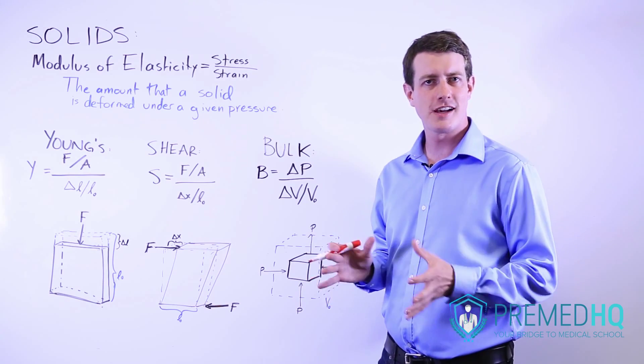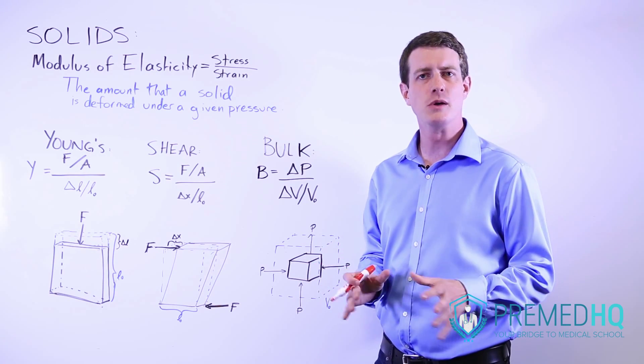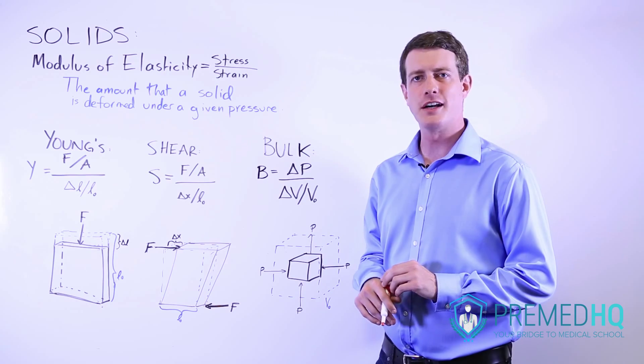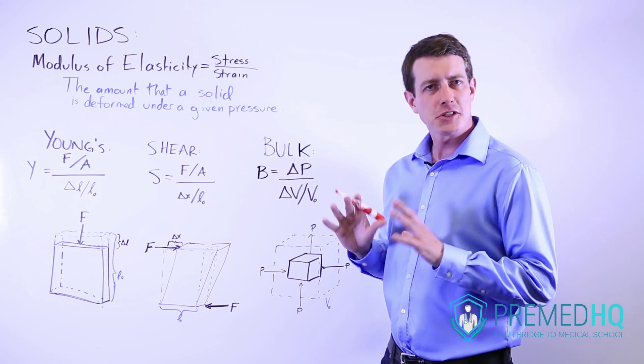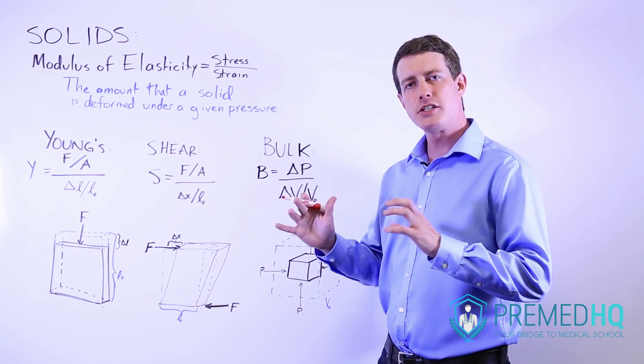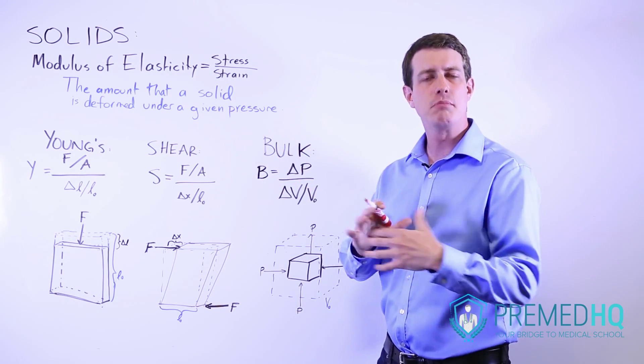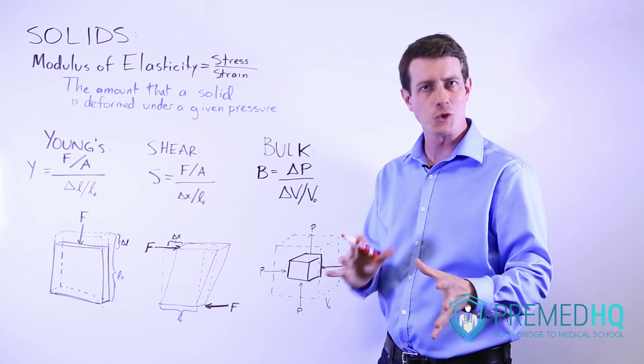Solids tend to have a lot fewer testable properties than fluids do, but one thing you're likely to encounter is a modulus of elasticity. A modulus of elasticity basically tells you how much a solid will change shape in response to some force or some pressure.